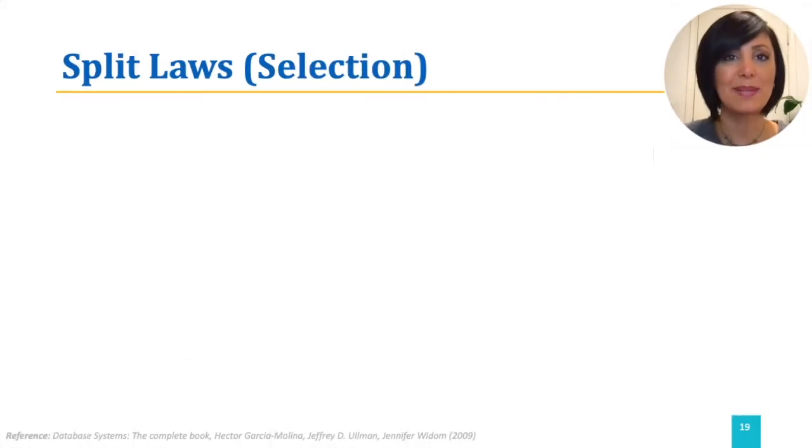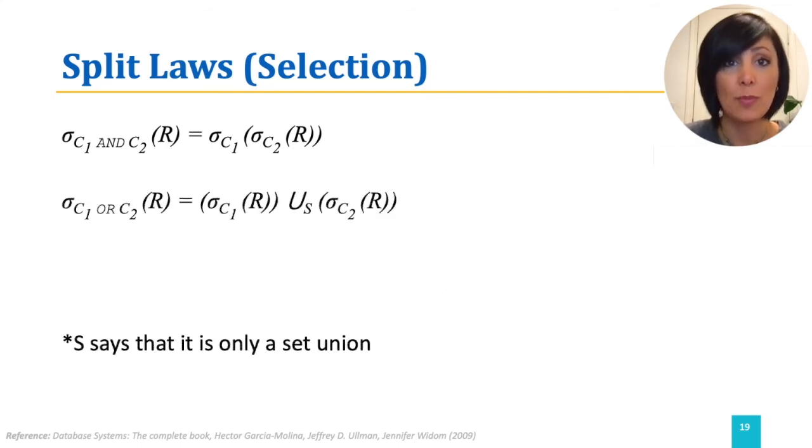Let's start with the split laws. We can split the select on logical end of two conditions and have two selects, each with one of those conditions and the selects applied consecutively. Another split law is selecting tuples as logical or of two conditions, which could be expressed as set union of selective tuples on each of those conditions.